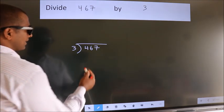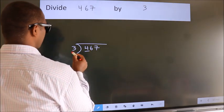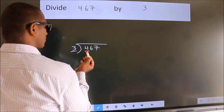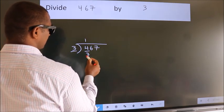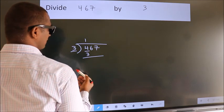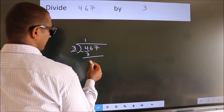Here we have 4, here 3. A number close to 4 in 3 table is 3 ones 3. Now, we should subtract. We get 1.